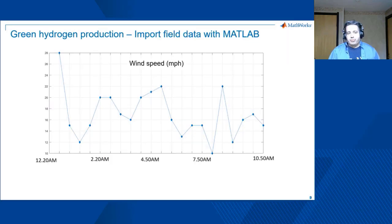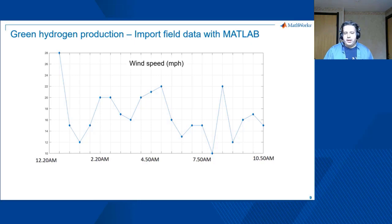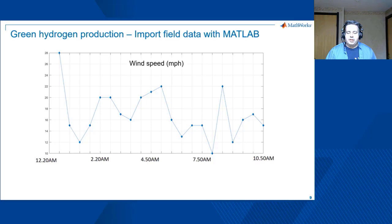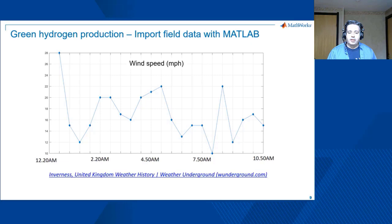When it comes to green hydrogen production from renewables, the ability to import data from wind or sun into models is very important, and there are many available sources online. In this case, you see a wind speed trace for almost one day from Inverness in Scotland. That can be very well done in MATLAB and then reused by Simulink and Simscape models.